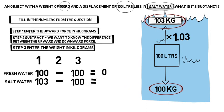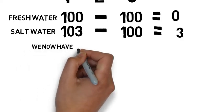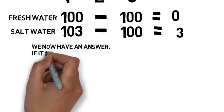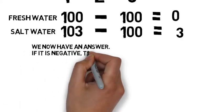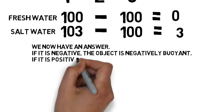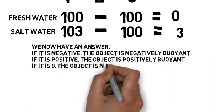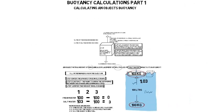Using the three steps: 103 minus 100 equals 3 kilograms of positive buoyancy. That object is going to be floating on the surface of a body of salt water. So when you get a question, draw a diagram first, then fill in the numbers.